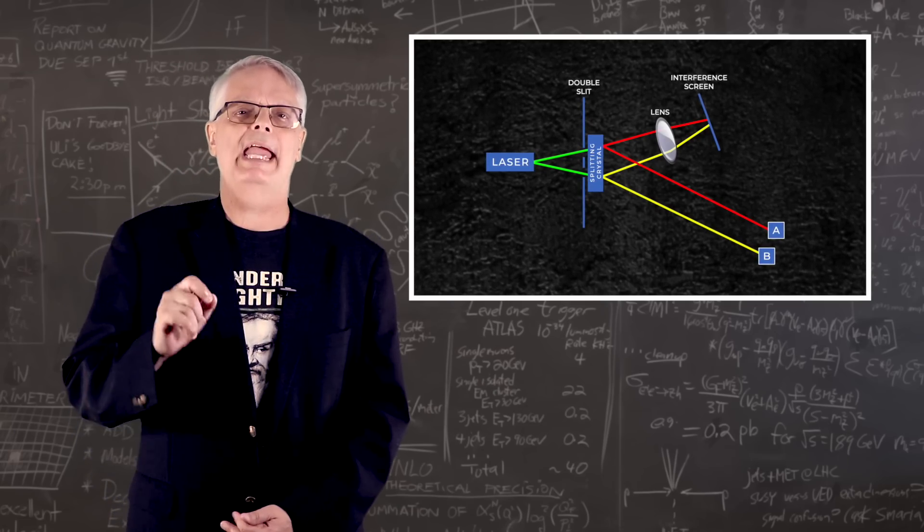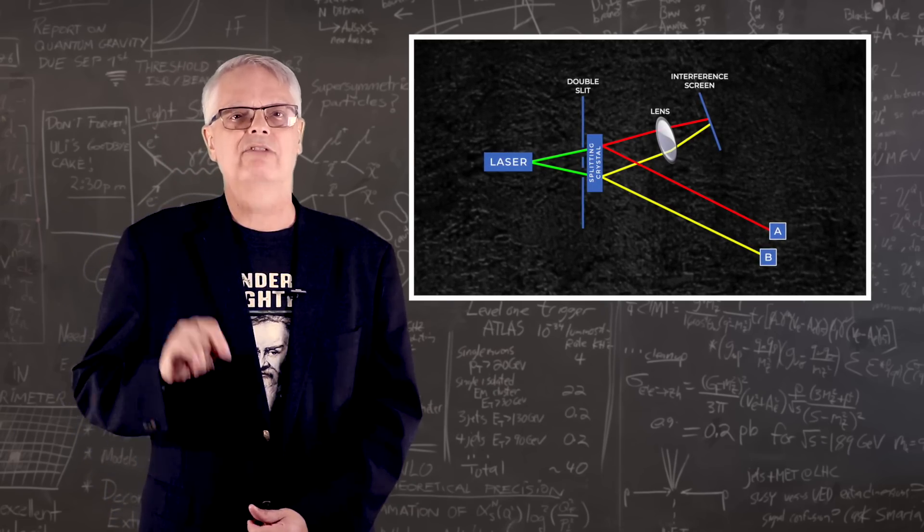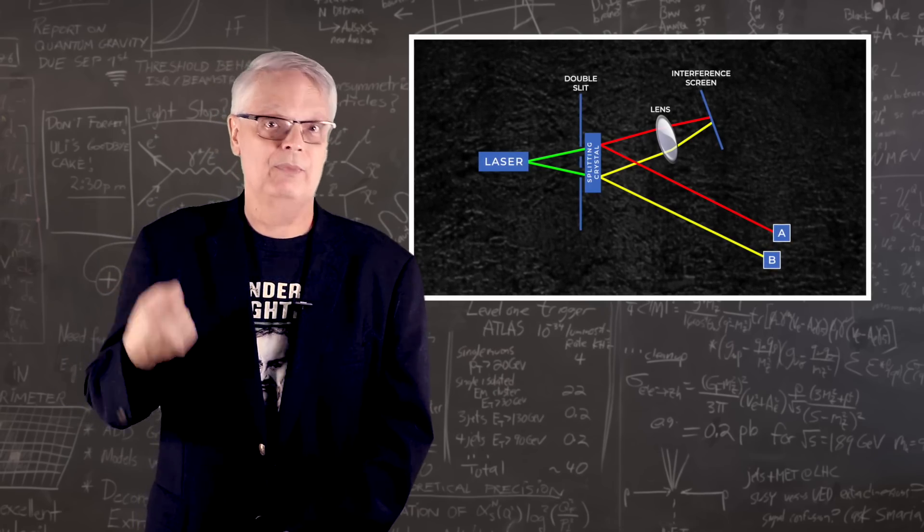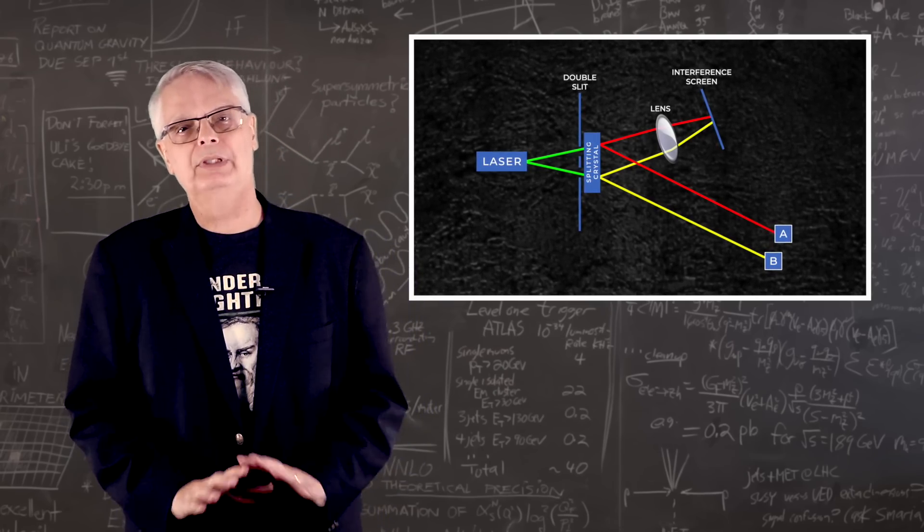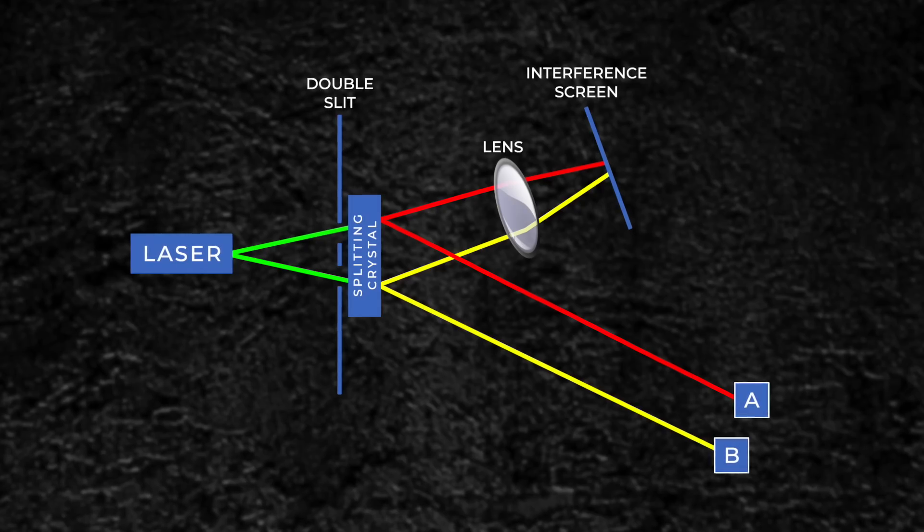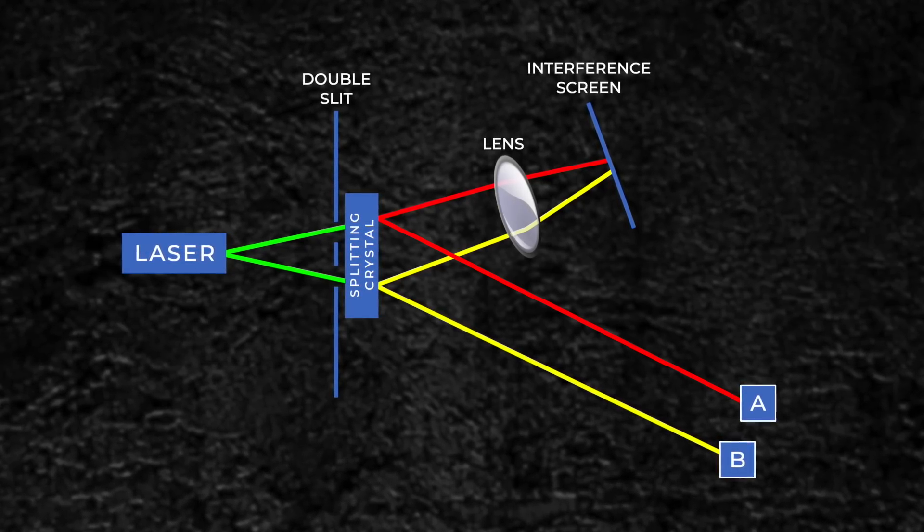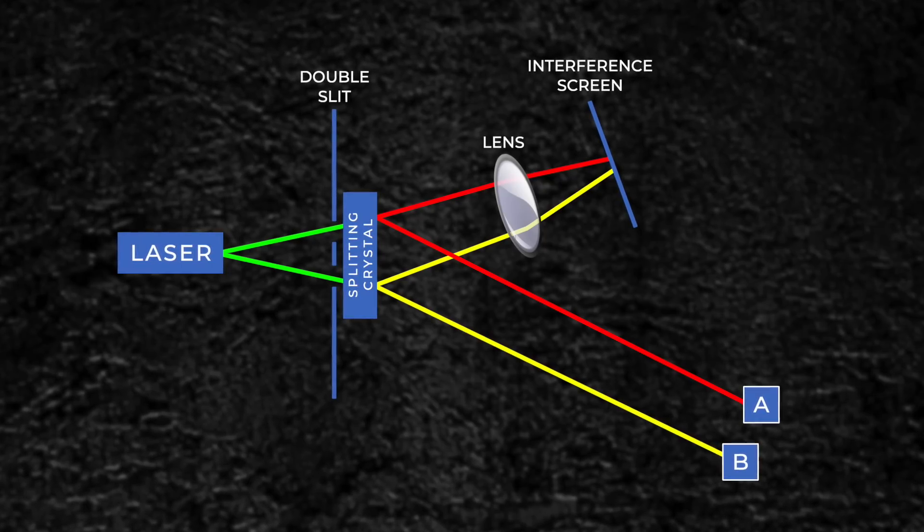So what does that mean? It means that if you turn A and B on, detecting the cousin photon affects what the photon hitting the screen does in the past. This experiment seems to completely screw up causality. The particle or wave pattern is created by whether a detector in the future sees which slit the photon goes through.